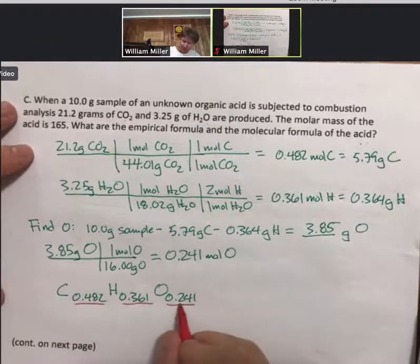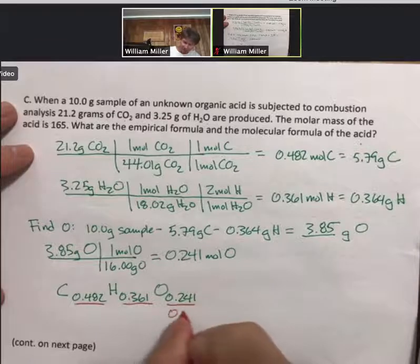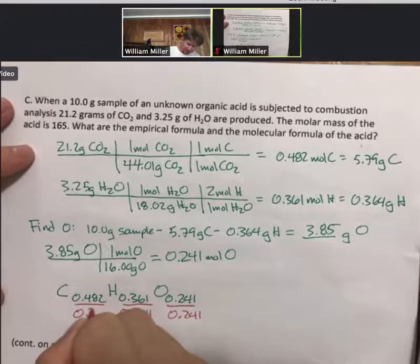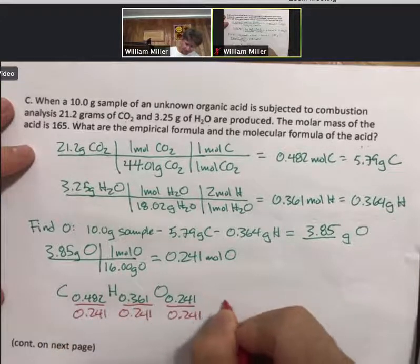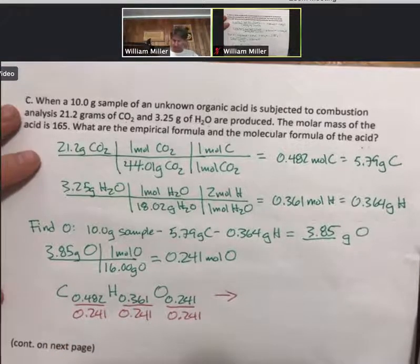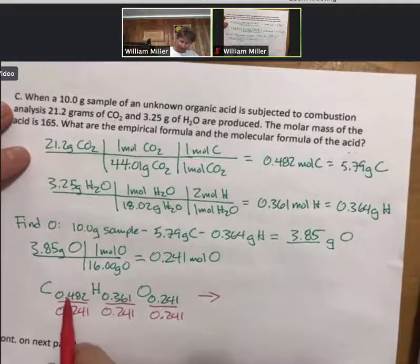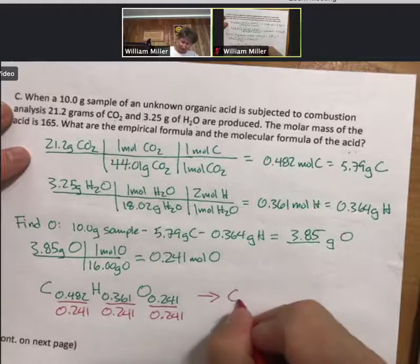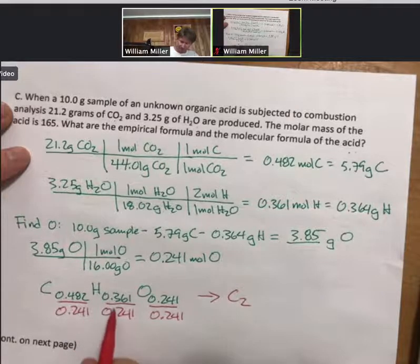I'm going to divide by 0.241. That's my smallest number of moles. And I'll do the math sort of in my head. It's going to be C2, H 1.5.